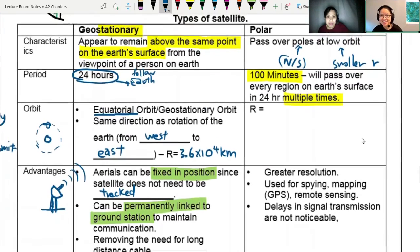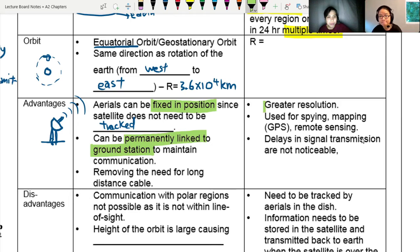The advantages of your polar satellite would be there is greater resolution because your signal travels less distance. Because we can control it, we can use for spying. It can be used for remote sensing. Maybe there's something strange happening in the middle of the ocean there, I want to go and take some data. I can send a satellite there because I can remote control. Because it's close to the Earth's surface, the signal transmission lag is not really as noticeable. Less lag because the signal travels less distance.